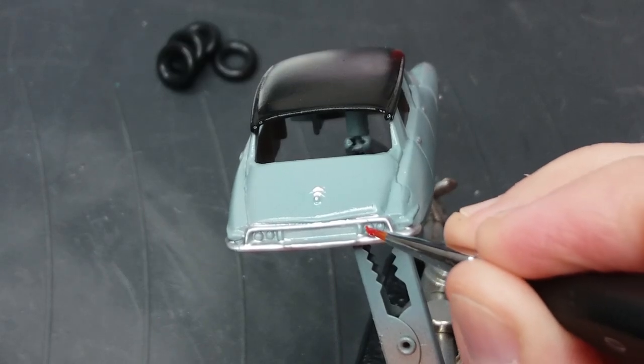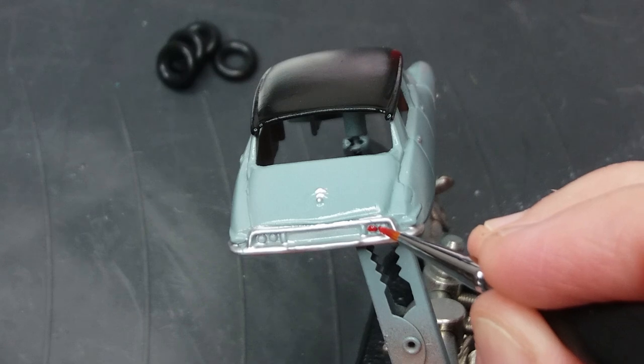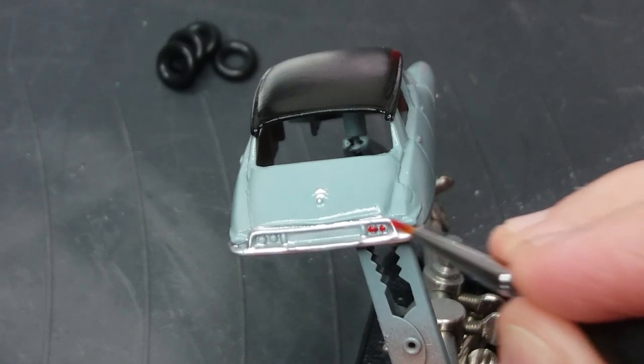Okay so I'm just painting in the brake lights on the back of the car red with some Tamiya red. This is the last little bit of detailing I'm going to do on the car.